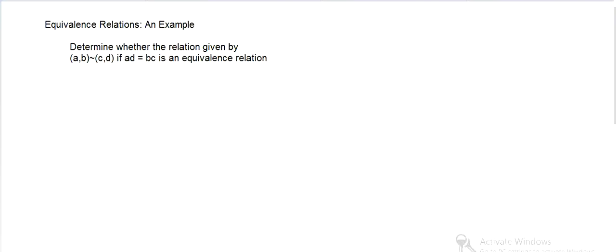We're given a relation where AB is related to CD if AD equals BC. We want to see if that satisfies the three properties, so we need to check it's reflexive, which means that AB is related to AB.